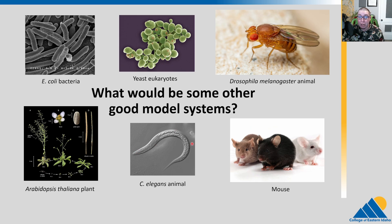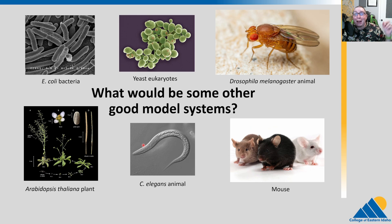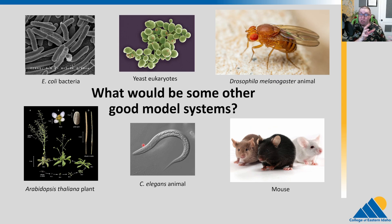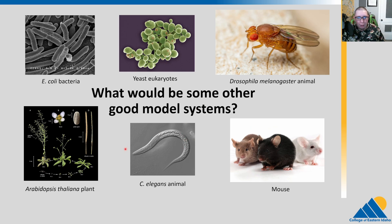C. elegans, the nematode worm — very cool system. C. elegans grows to a set number of cells. You grow them and they grow to, let's say, 687 cells, and you grow another one and it also grows to 687 cells. That's really cool if you're interested in development — what happens if I kill one of those cells during development? Do they continue to develop properly? Also, some very cool genetic things like RNA interference were discovered in C. elegans. C. elegans is super cool for development, and also has a real quick generation time.